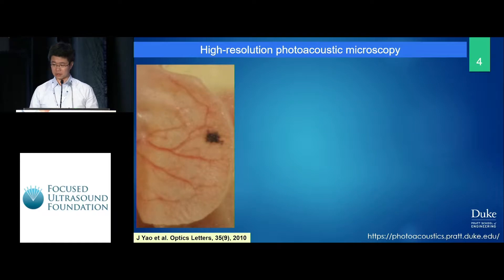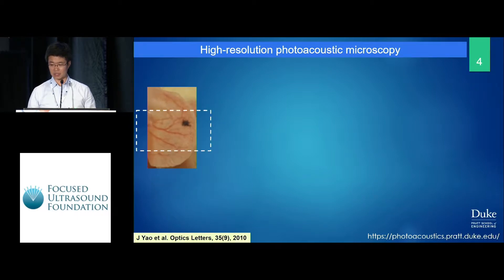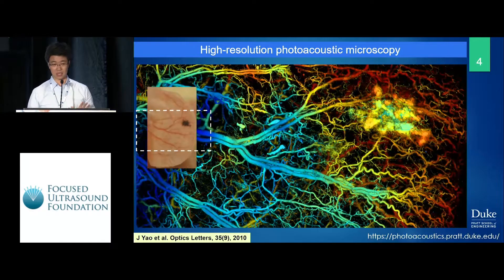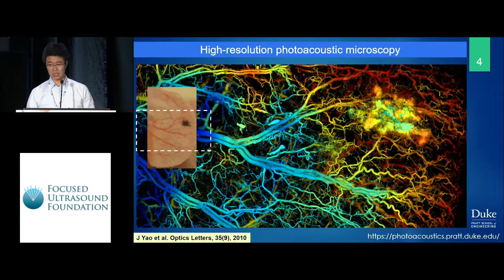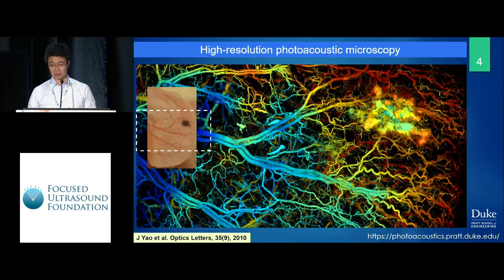Here are a few examples of photo-acoustic imaging. This is just a piece of mouse skin. We can image the vasculature of the skin based on hemoglobin as the endogenous absorber — no contrast agent is injected here. We can very well differentiate the vessels from the background because only the hemoglobin absorbs light, giving us the optical contrast, while the resolution is determined by the ultrasound.